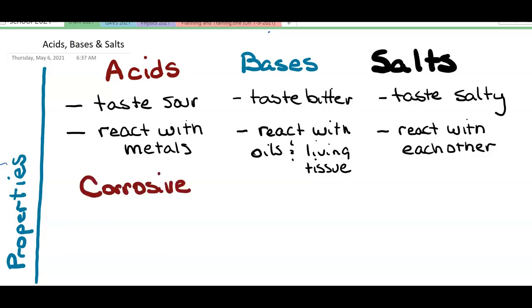The sour tasting things that reacted with metals were said to be corrosive. The things that reacted with oils and living tissues were said to be caustic. And so the term corrosive has come to mean reacting with metals, while caustic has come to be the term that means reacting with oils and living tissues.